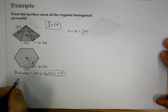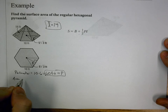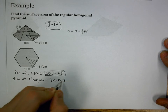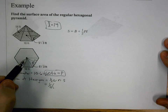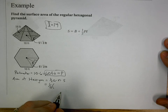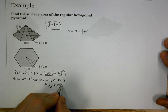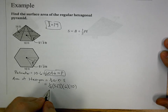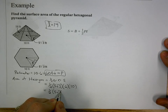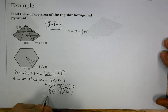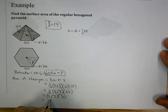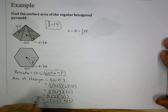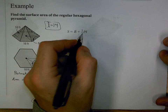We still need the base area. The area of a regular hexagon is one half the apothem times the number of sides times side length. The apothem is the perpendicular distance from the center to a side — the height of the inner triangle. With apothem 5√3, sides = 6, and side length = 10, base area = ½ × 5√3 × 60 = 150√3 feet squared.